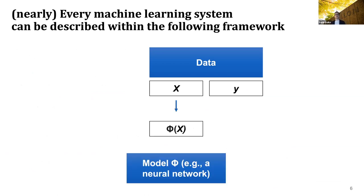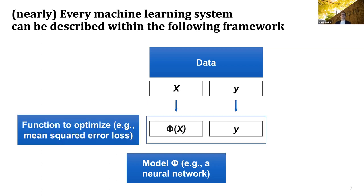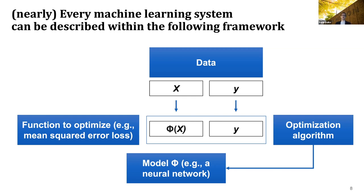What we want to do is make some model that can take features and produce targets. Of course, we need to measure how well we're doing and how similar our predictions are to the targets we want to predict. For that, we need a function to optimize — for example, for regression, it's just mean squared error loss. We have model parameters such as weights in linear regression, and then we need some algorithm to perform this optimization. For neural networks, we usually use gradient descent methods and some variations on top of that.